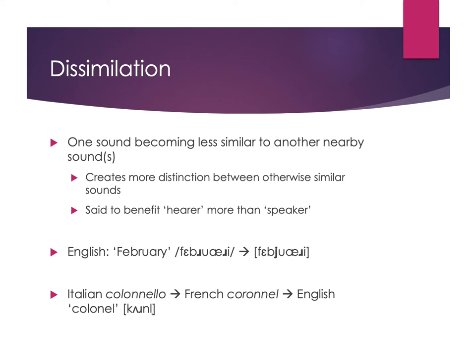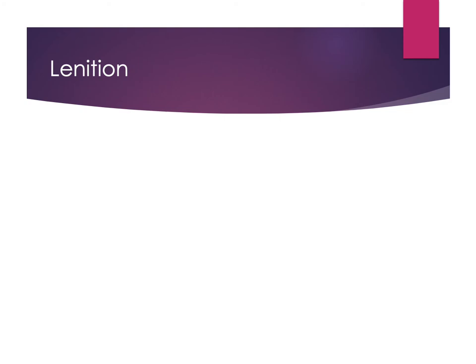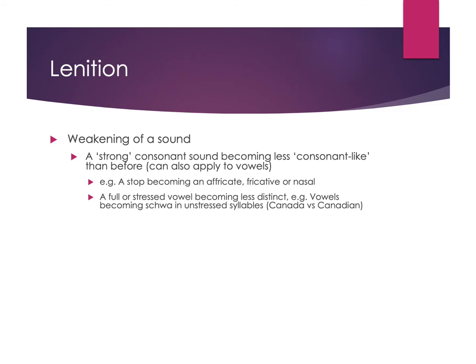The next processes have to do with how much restriction is found in sounds as they change. Lenition describes the weakening of a sound — a stronger consonant becomes less consonant-like. A good example is a stop or plosive becoming an affricate, fricative, or nasal, losing some of that constriction so that more airflow is possible. It's losing that increased restriction in its manner of articulation.